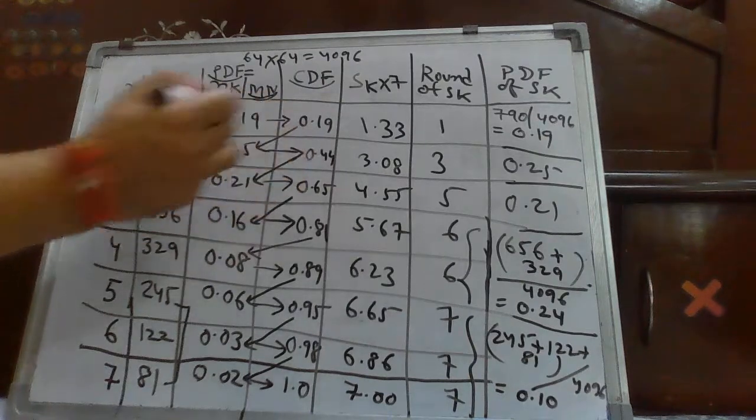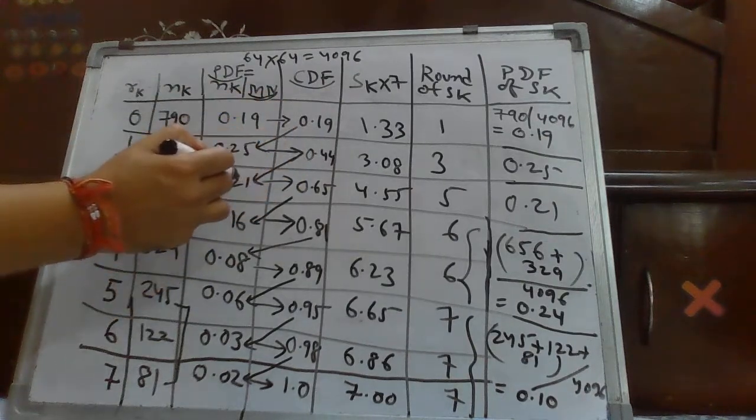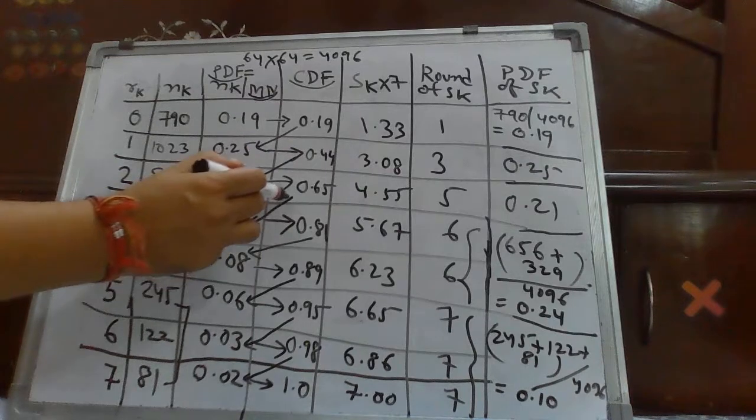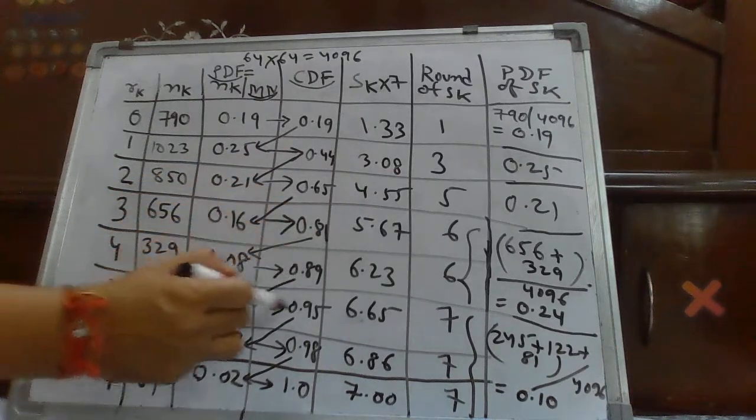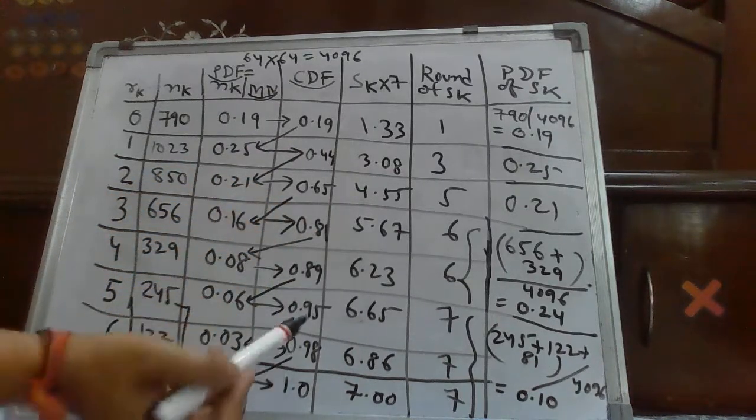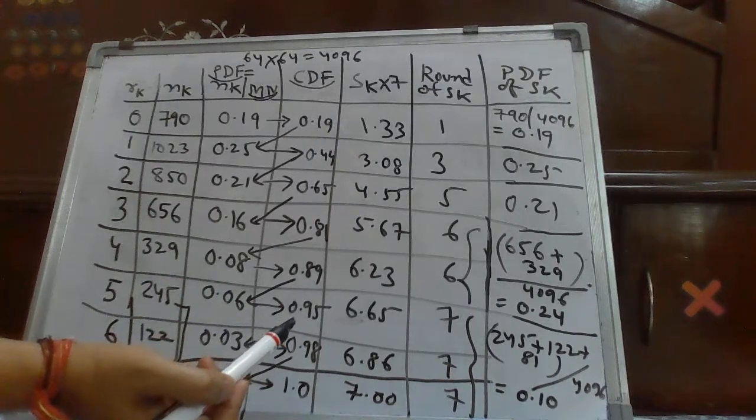So, 0.19 plus 0.25, we will get 0.44, plus 0.21, you will get 0.65. Similarly for this, similarly for this, similarly for this, and at last you will get 1.0.